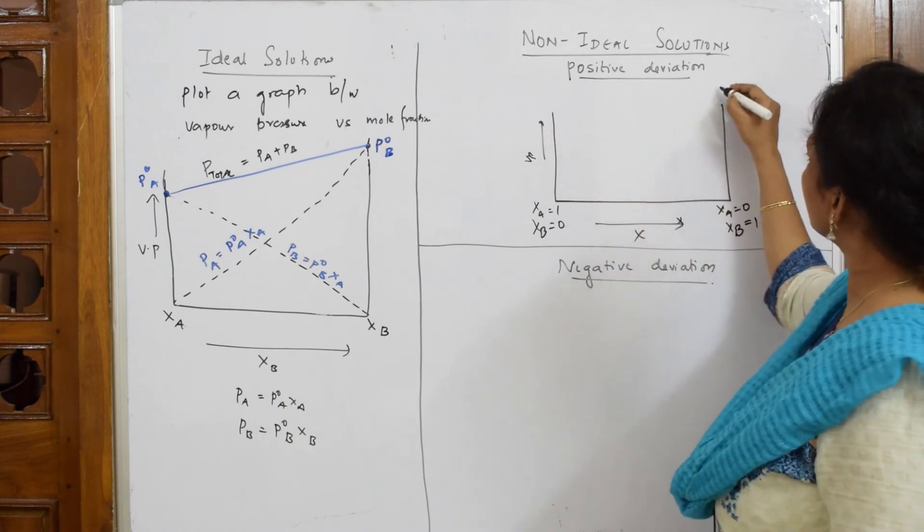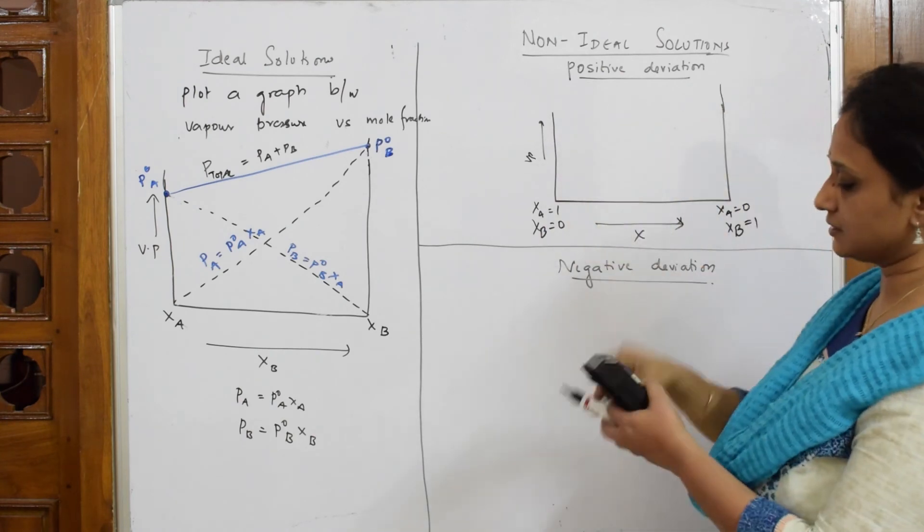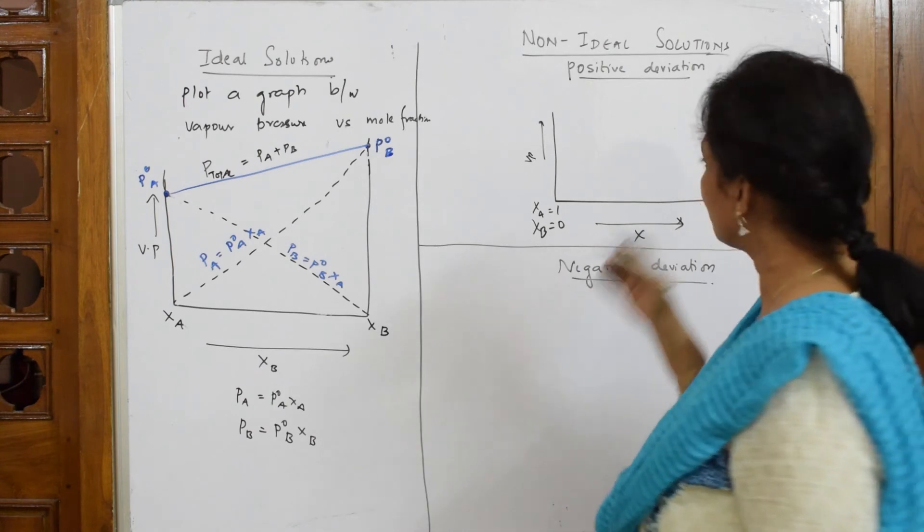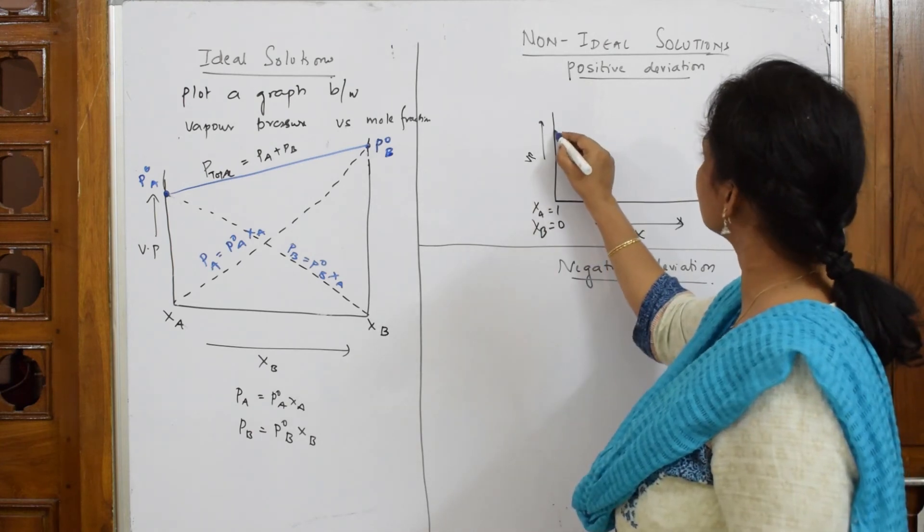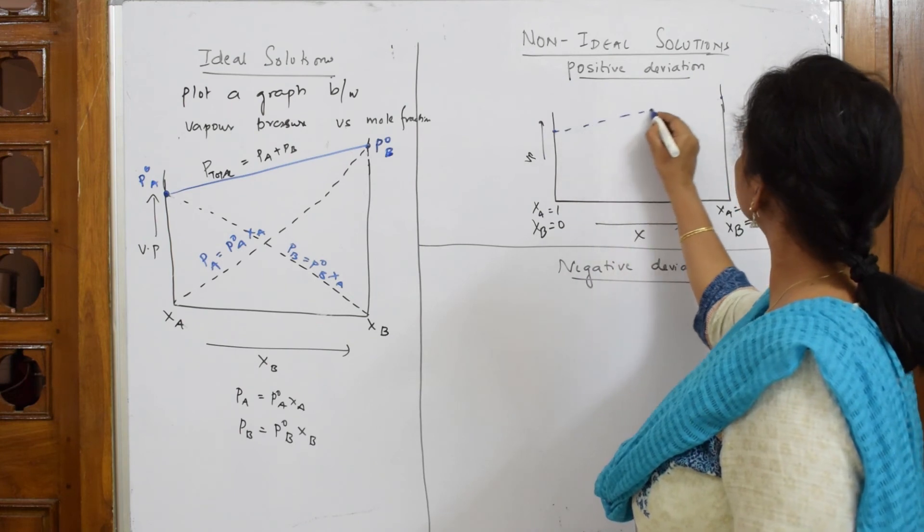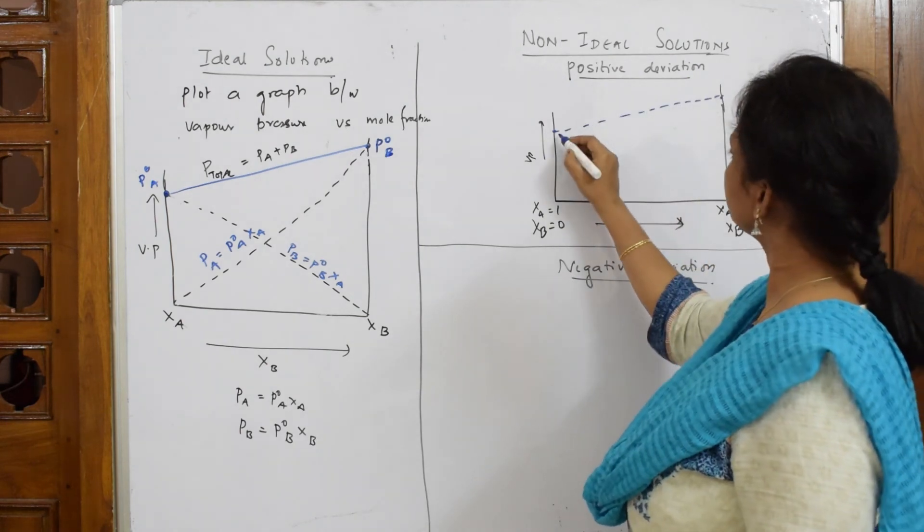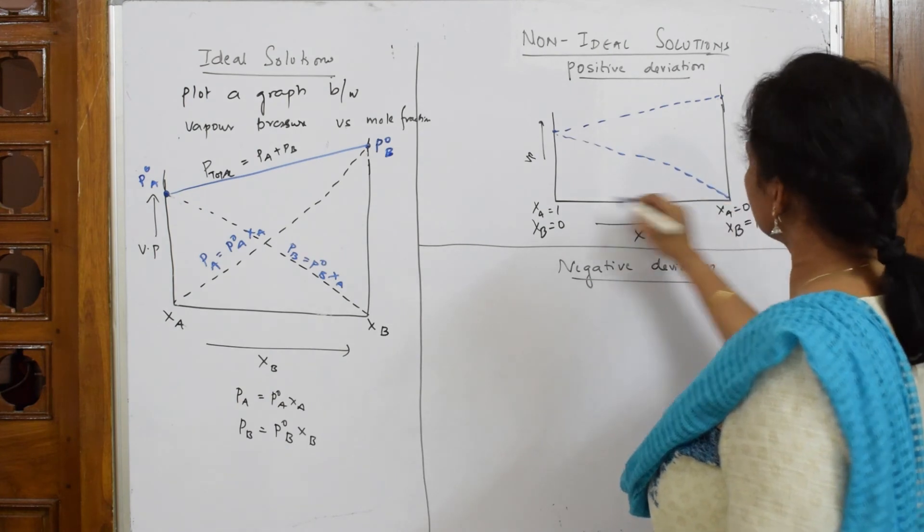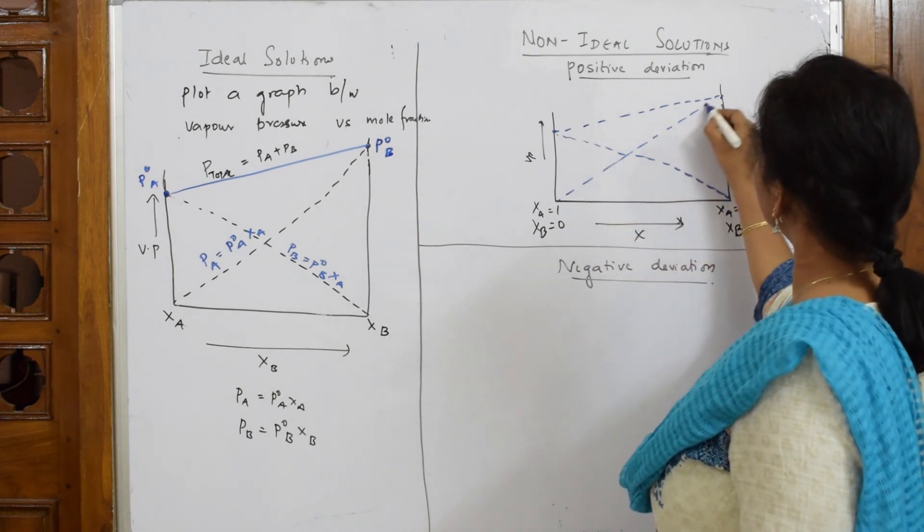Now, copy the same. So, what do I have? I have an ideal gas curve, ideal solution curve. I am just going into that ideal gas equation, I am sorry for that. So, ideal solution, this curve, this is your ideal solution. This is also your ideal solution.